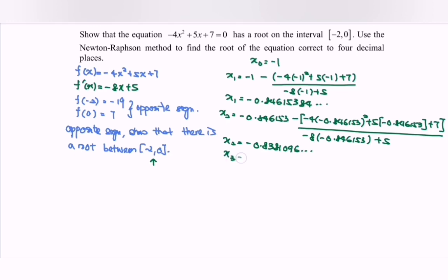x₃: -0.8380874. x₄: -0.8380874. So we have the repeated values. So we can say the root of the equation would be x = -0.838.